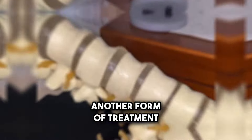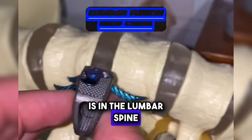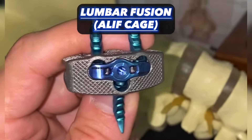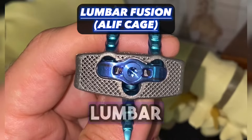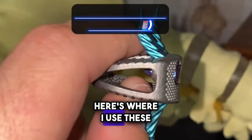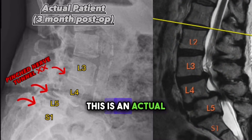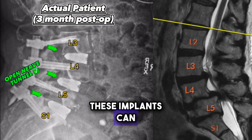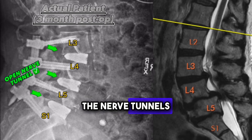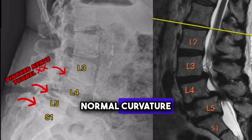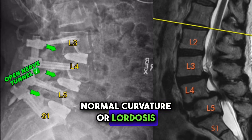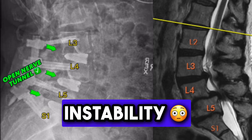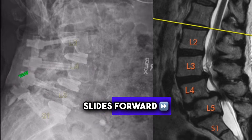Another form of treatment is in the lumbar spine — a lumbar fusion. This is an ALIF cage, A-L-I-F, Anterior Lumbar Interbody Fusion. Here's where I use these implants: this is an actual patient of mine who had severe disc collapse and pinched nerve tunnels. These implants can open the nerve tunnels, restore normal curvature or lordosis in the spine, and provide fusion when there's instability — when one bone slides forward on the other.